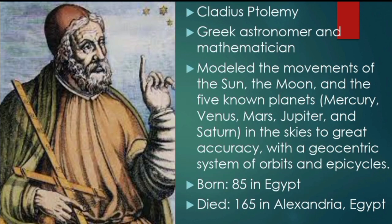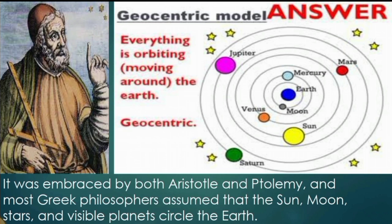Who is Claudius Ptolemy? Claudius Ptolemy was a Greek astronomer and mathematician who modeled the movements of the Sun, the Moon, and the five known planets — Mercury, Venus, Mars, Jupiter, and Saturn — in the skies with great accuracy using the geocentric system of orbits and epicycles. He was born around 85 CE in Egypt and died around 165 CE in Alexandria, Egypt. This is the picture of the geocentric model, which shows the Earth at the center of the universe.